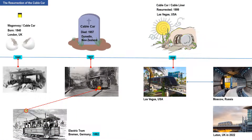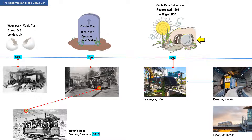The cable car was born in 1840. The overhead electrical cables disrupted the cable technology of the cable car, and it was gradually suffocated until it died in 1957. It was only as recent as 1999 that cable cars would be resurrected from the grave — this time placed above the ground. It was installed in Las Vegas in 1999 by Doppelmayr, who would call the system a cable liner.